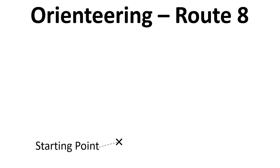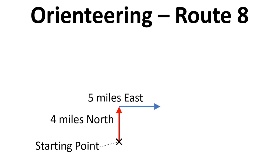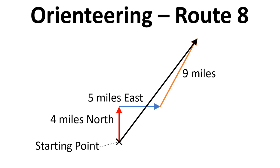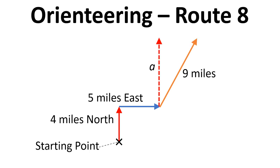We're going to draw a diagram where we have a starting point. We go 4 miles north, 5 miles east, and then 9 miles at 30 degrees from north. We're going to work out the distance from the starting point to the finish point, but to do this first we have to focus on the 9 miles that's 30 degrees from north.